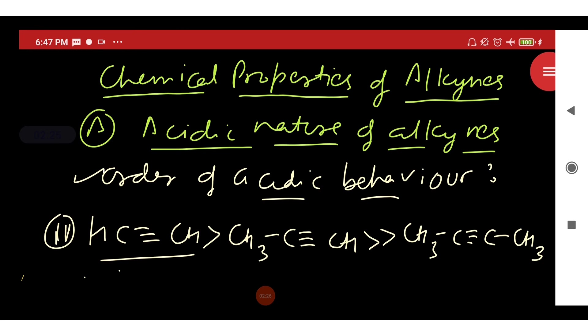Now here is the order of acidic character of different alkynes. It is clear that as the number of alkyl group increases, acidic strength decreases.